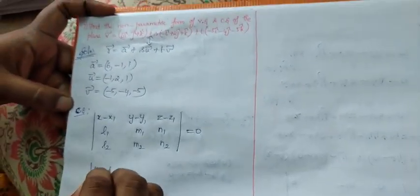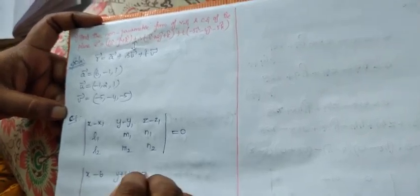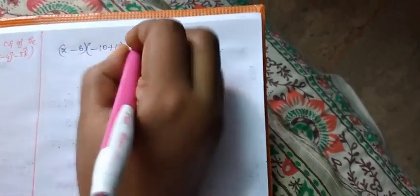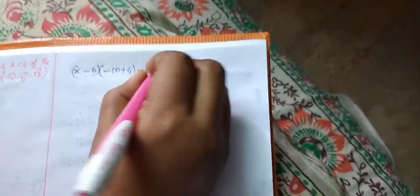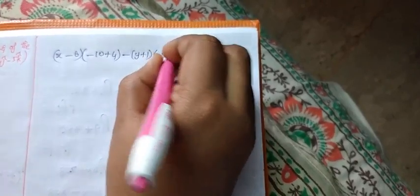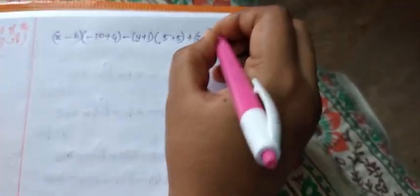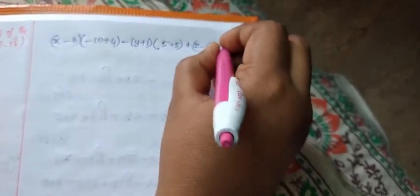Now substitute the values: (x − 6), (y + 1), (z − 1) in the first row; (−1, 2, 1) in the second row; (−5, −4, −5) in the third row, equal to 0. Expanding: (x − 6) into (−10 + 4), minus (y + 1) into (5 + 5), plus (z − 1) into (4 + 10) equal to 0.